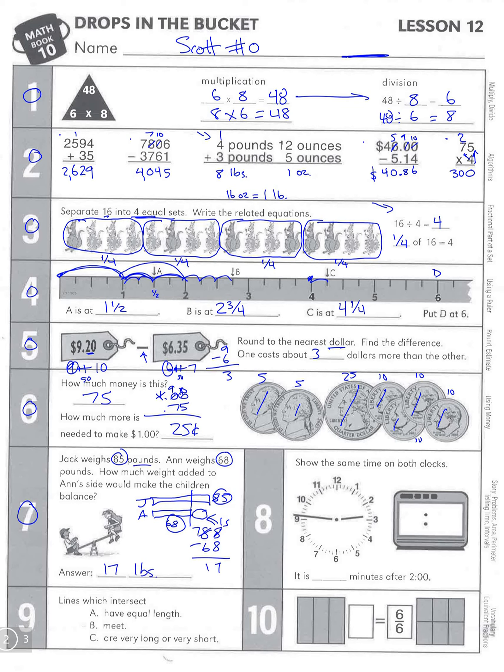Number 8: Time. Show the same time on both clocks. We always start with this long minute hand. We can count 5, 10, 15, 20, 25, 30, 35, 40, 45, and then 46. So it's 46 minutes since it was the hour. Then we look at this hour hand—we can see it's between the two and the three, so it's in the two o'clock hour. It's been 46 minutes since it was two o'clock.